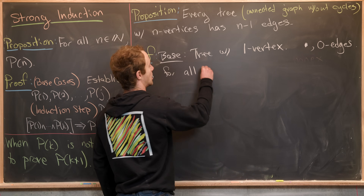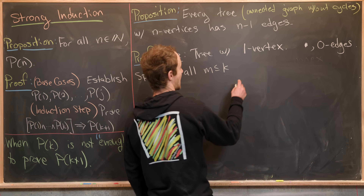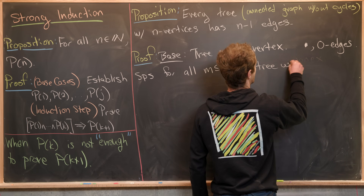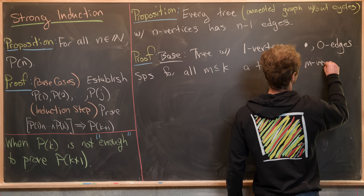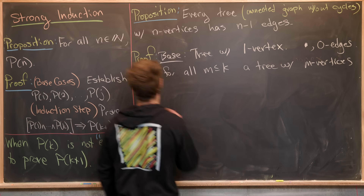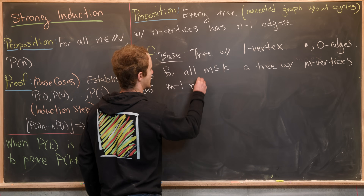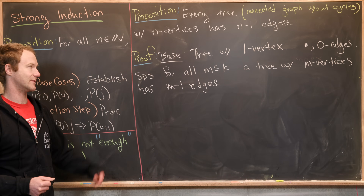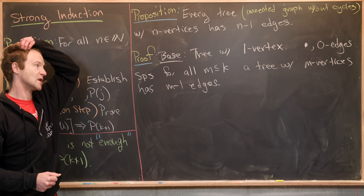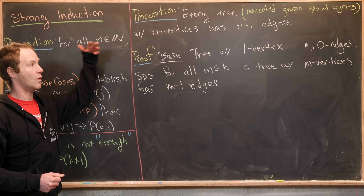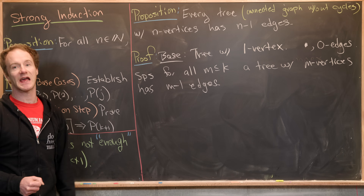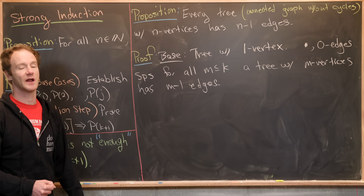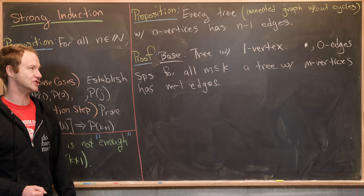Now we do strong induction. Suppose for all m ≤ k, a tree with m vertices has m-1 edges. That means trees with 1, 2, 3, up to k vertices have 0, 1, 2, up to k-1 edges respectively.